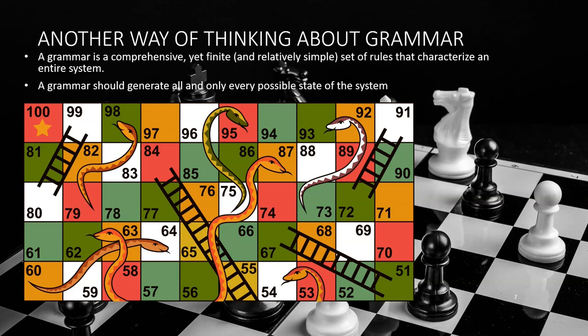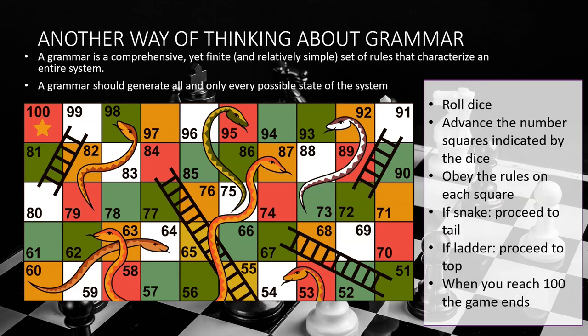In contrast, a generative grammar of snakes and ladders might look like this: roll a dice; advance the number of squares indicated; obey the rules in each square; if you land on a snake's head, proceed to the tail; if you land on a ladder, proceed to the top; and when you reach 100, the game ends. This simple list of six rules will generate all and every possible game of snakes and ladders. It not only tells us what not to do, but gives us a simple set of rules for playing the game from beginning to end — this set of rules characterizes an entire system and generates all and only every possible game of snakes and ladders.